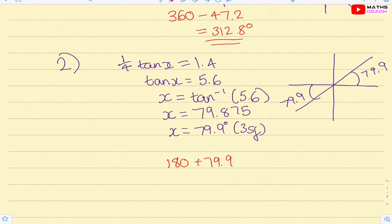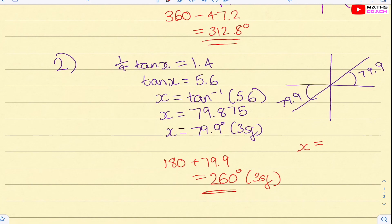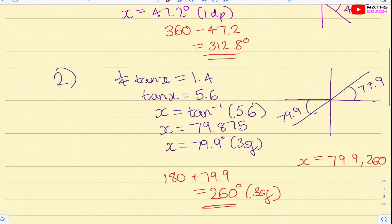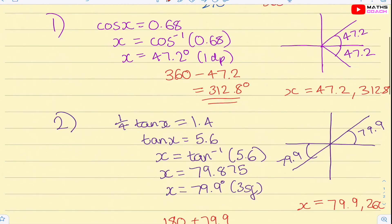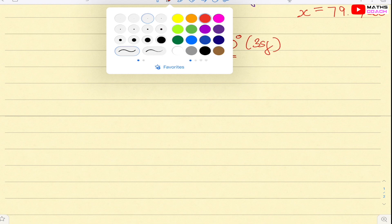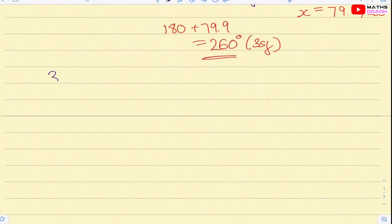So x is also 180 plus the 79.9, which gives us 260 degrees to three significant figures. So our angles here would be x equals to 79.9 and 260. Try and get into a good habit of writing the final answers like this. And you will see in the latter examples why this will help you out a lot.